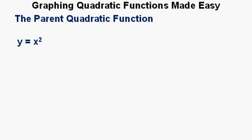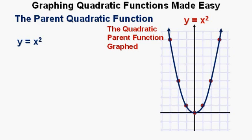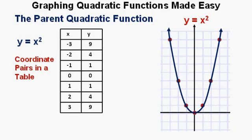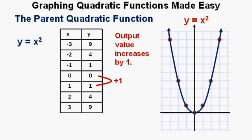Here's the quadratic parent function graphed: y equals x squared. Here are all the points entered in a table. There is a pattern in these output values. As the input value increases from 0 to 1, the output value also increases by 1. As the input value goes from 1 to 2, the output value increases by 3. And as the input value goes from 2 to 3, the output value increases by 5.